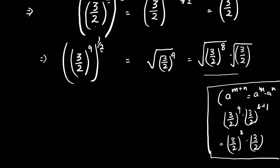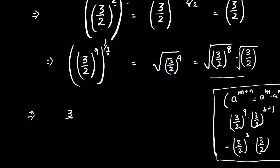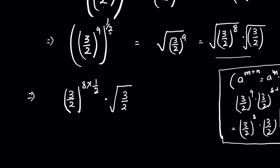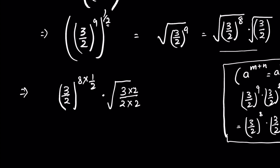Now this is (3 upon 2) whole to the power 8, multiplied by 1 upon 2 — because square root means to the power 1 upon 2 — multiplied by the square root of (3 upon 2). Or we can write it as 3 multiplied by 2 upon 2 multiplied by 2, because multiplying both numerator and denominator by 2 gives an equivalent fraction. Now this is (3 upon 2) whole to the power 4, and this is root 6 multiplied by root 1 upon 4.